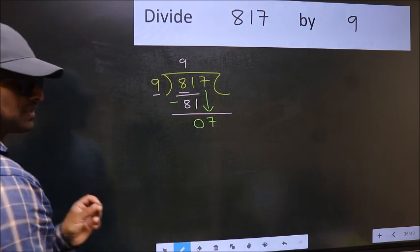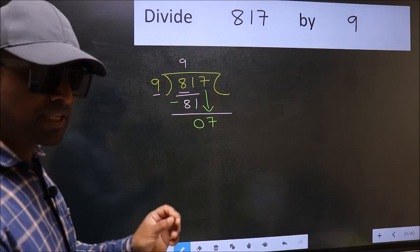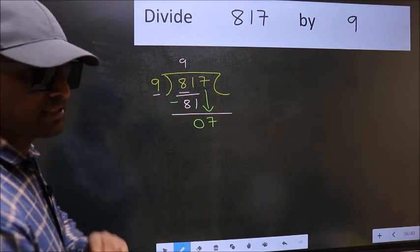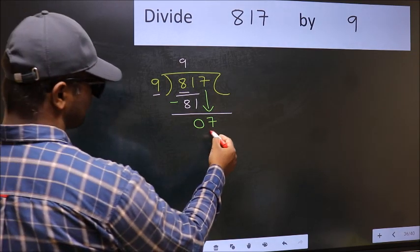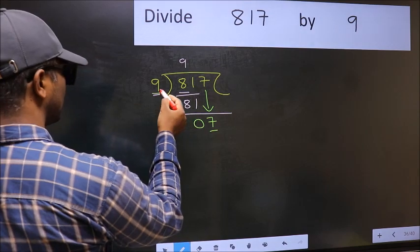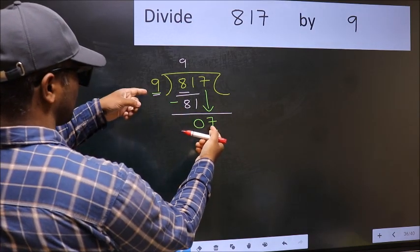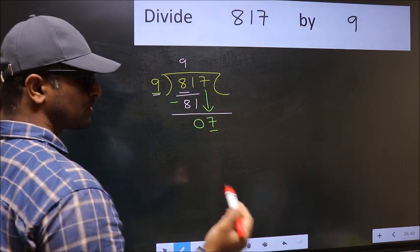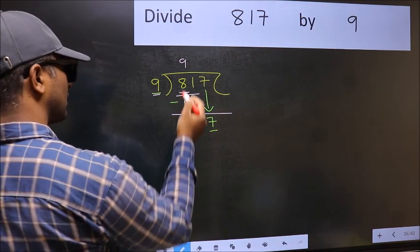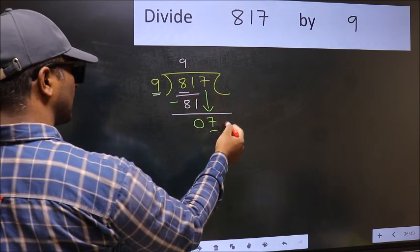After this step, the mistake happens. And the mistake is this. Here we have 7, and here 9. 7 is smaller than 9, so what many do is they directly put dot and take 0.